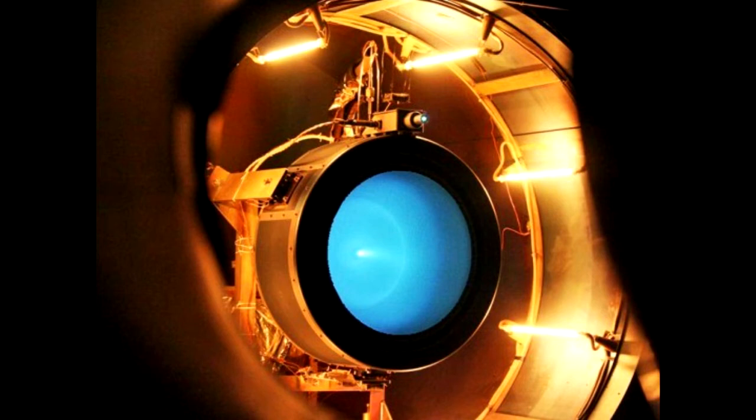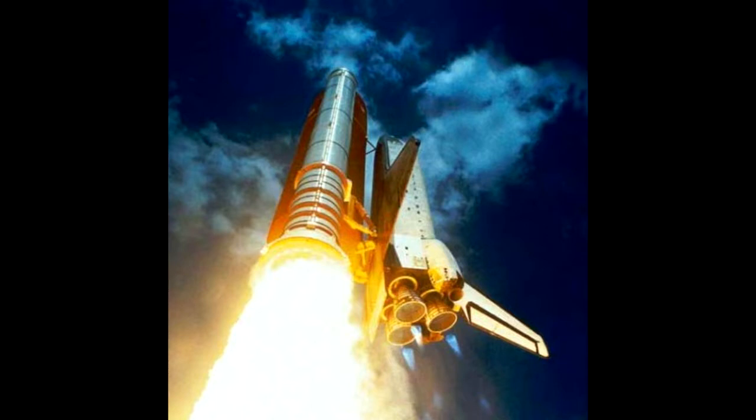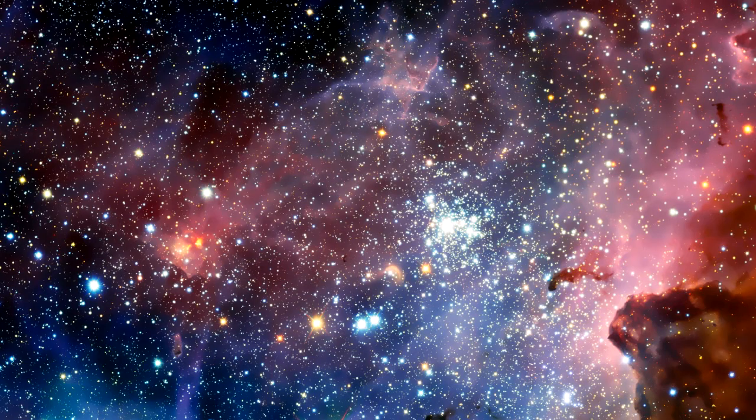An ion thruster produces smaller levels of thrust related to chemical rockets, but an ion thruster has a fuel efficiency of 10 to 12 times greater than a chemical thruster. The higher the rocket's fuel efficiency, the farther the spacecraft can go with a given amount of fuel. Given that an ion thruster produces small levels of thrust related to chemical thrusters, it needs to operate in excess of 10,000 hours to slowly accelerate to speeds necessary to reach the stars.